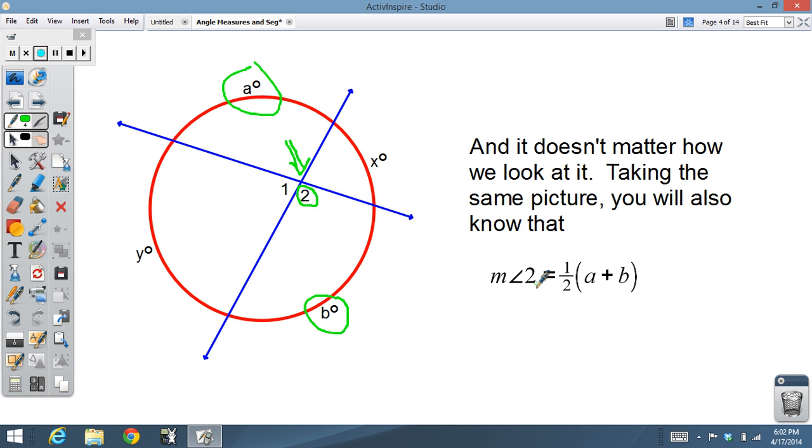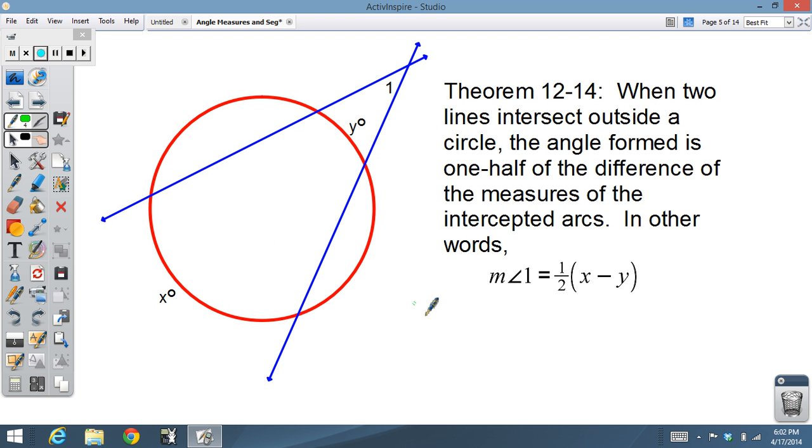When two lines intersect outside a circle, we get to theorem 12-14. Two lines intersecting outside, now the angle formed is one half the difference of the measures of the intercepted arcs. Or in other words, angle 1 is one half of x minus y. So always take the bigger one, subtract the littler one, take one half, and we got the measure of the angle.